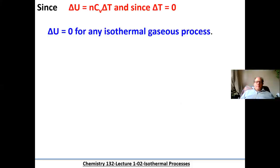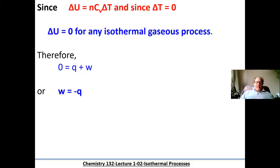If we know delta U equals Q plus W, and delta U is zero for isothermal changes, then Q (heat) and W (work) must be equal and opposite. So for any gas that is expanding or contracting, work and heat are equal and opposite. For instance, if a gas expands, it needs heat energy for that expansion, so the heat flowing into the gas must equal the work done by the gas as it expanded.